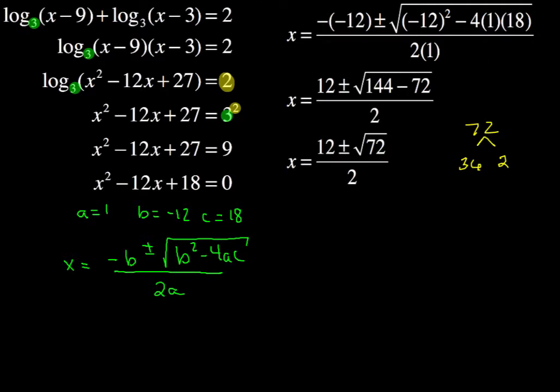So that would then end up making this turn into 12 plus or minus the square root of 36 times the square root of 2. And some people might be able to skip that step because you can do that mentally, and then just go right ahead and write that as x equals 12 plus or minus 6 square root of 2 all over 2.